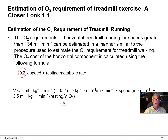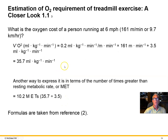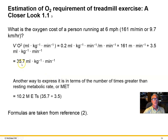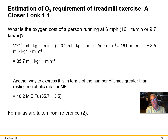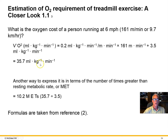We can do the same calculation for running. Instead of 0.1, we use 0.2 times the speed plus the resting metabolic rate. Using an example of running at 6 miles per hour — which is 161 meters per minute — we calculate and find that we're consuming 35.7 mL of oxygen per kilogram per minute. That's how easy it is to get the oxygen consumption and kilocalories per minute consumed from running at a certain speed.